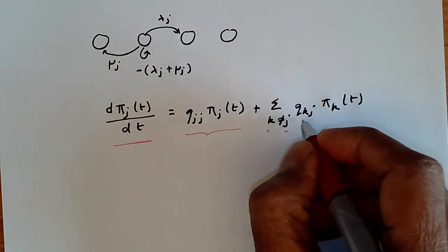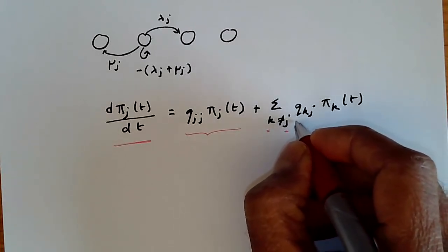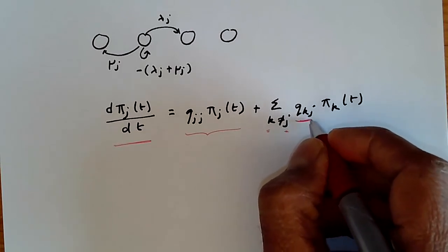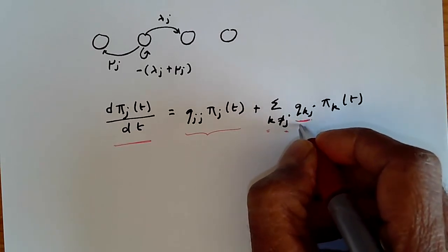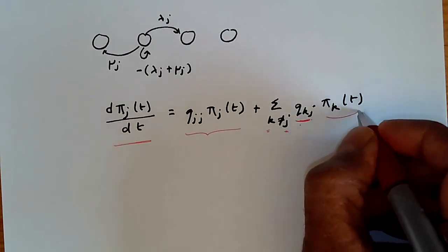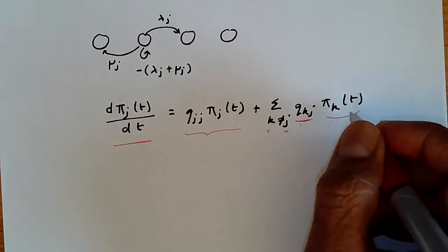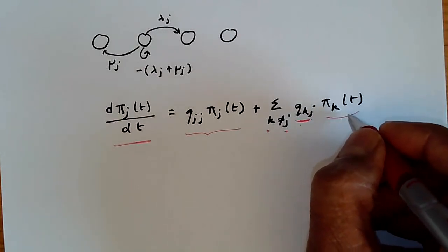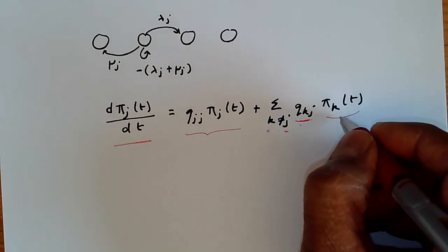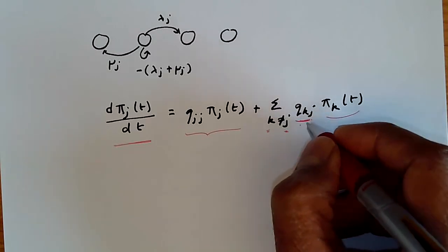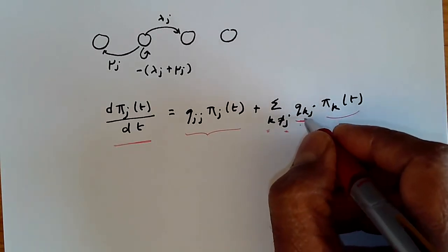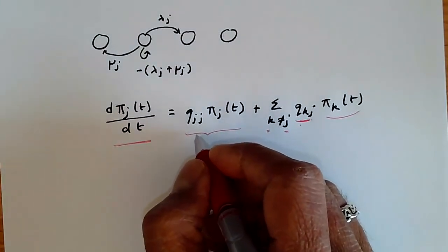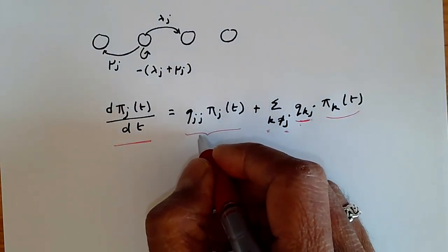This is the transition rate of entering state j from state k multiplied by the probability of being in that state k. We can think of pi k as the probability of being in state k, and then we have the flow of probability at a rate q k j from k to j, and q j j is the rate at which the probability of state j accumulates.